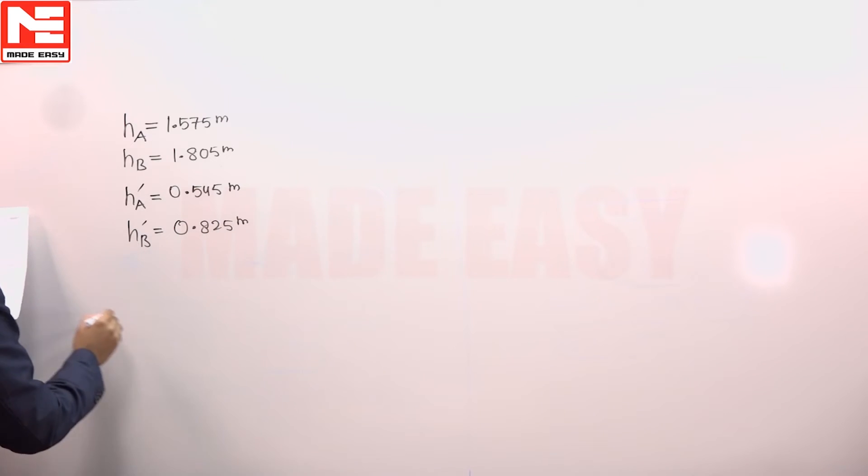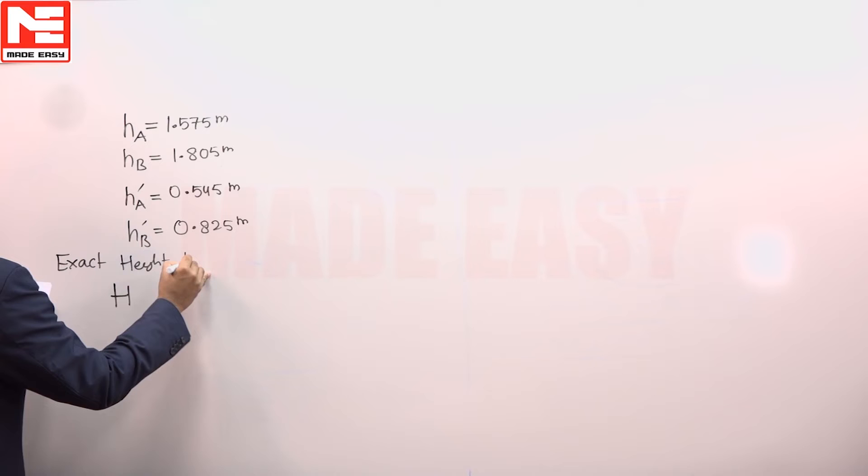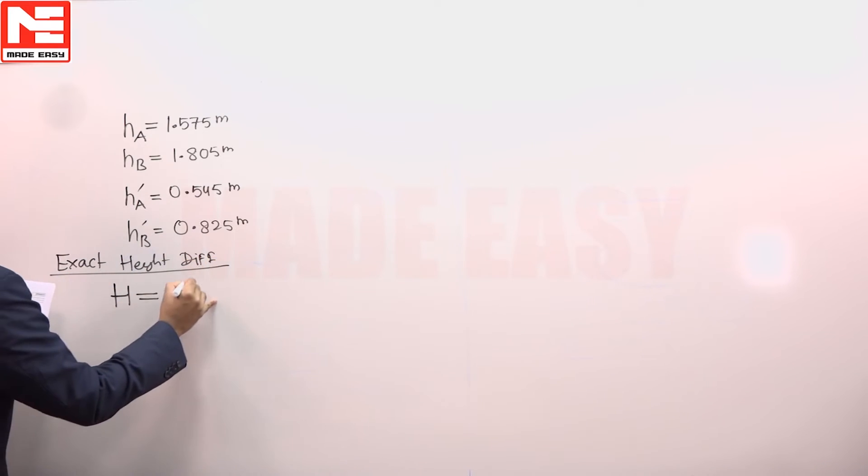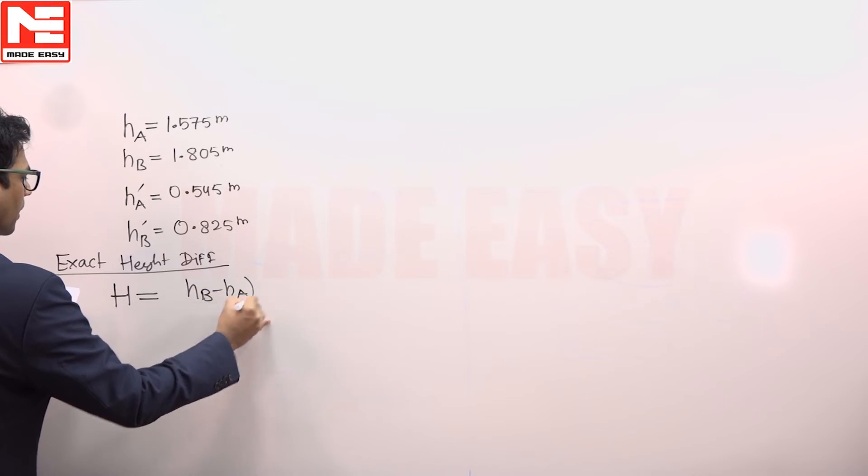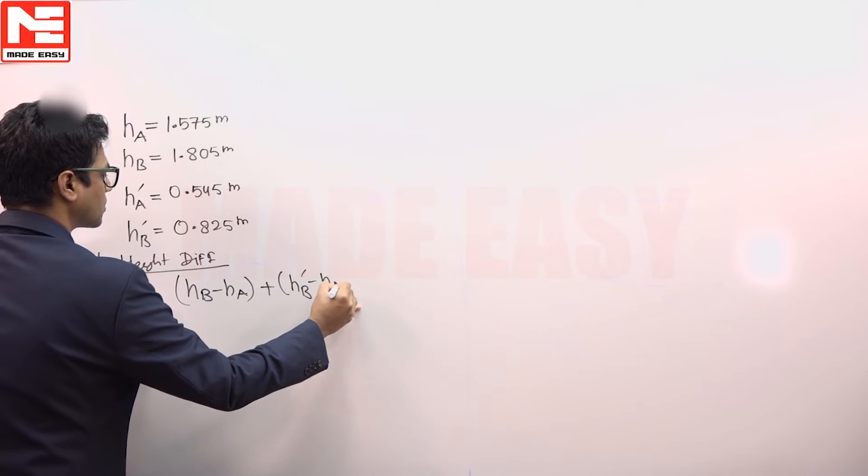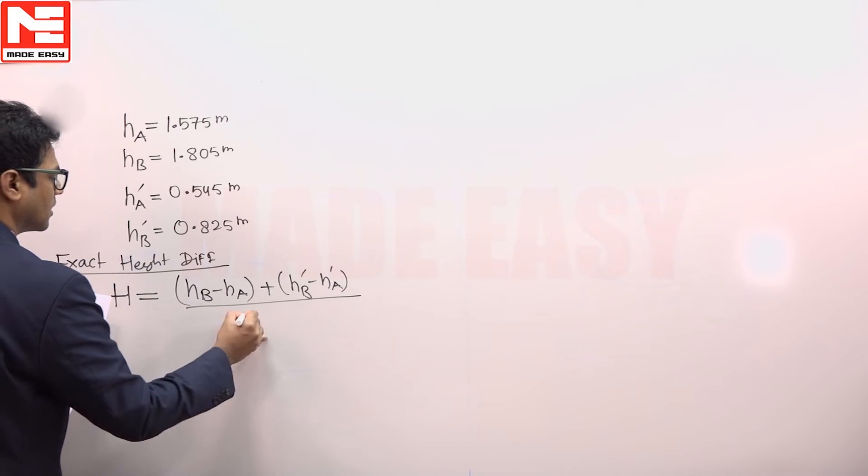Now we can write capital H, which is exact height difference. We can write exact height difference as (hB - hA) + (h'B - h'A) divided by 2.